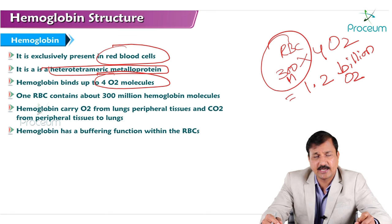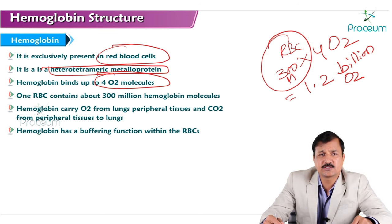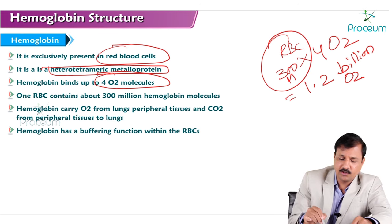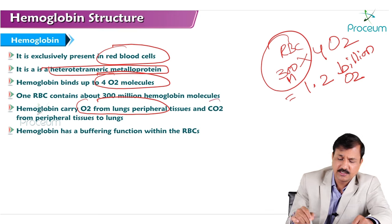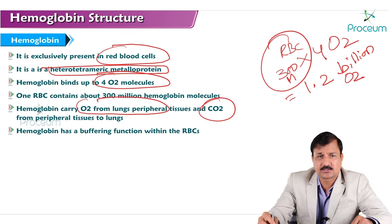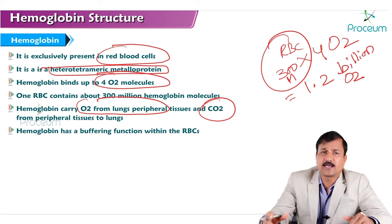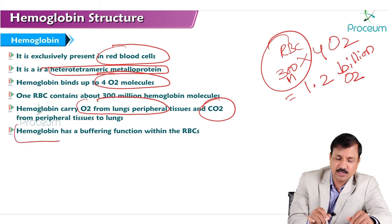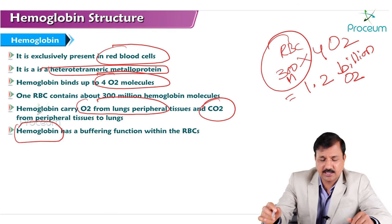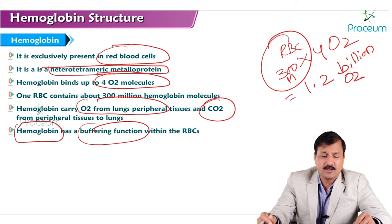That is the oxygen carried by one red blood cell when it goes to the lungs and brings oxygen from the lungs to the peripheral tissue. Hemoglobin carries oxygen from the lungs to the peripheral tissues, and while going from peripheral tissues back to the lungs, it carries carbon dioxide back. Hemoglobin also has a buffering function in the red blood cell, maintaining a normal pH.